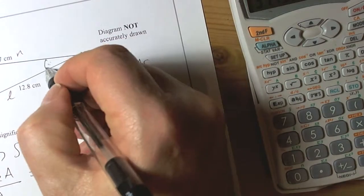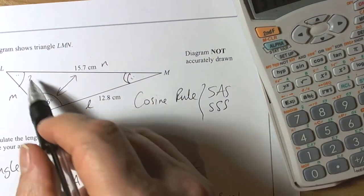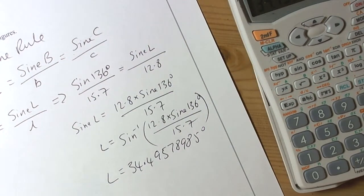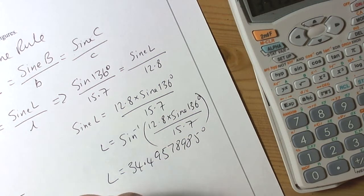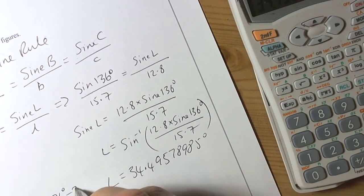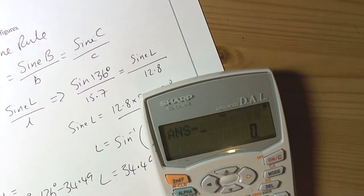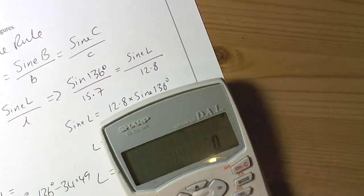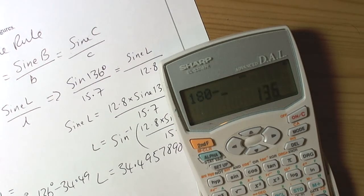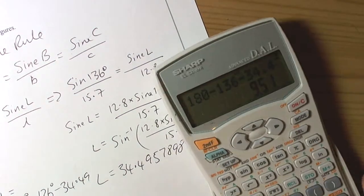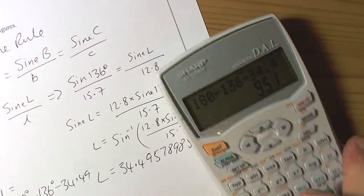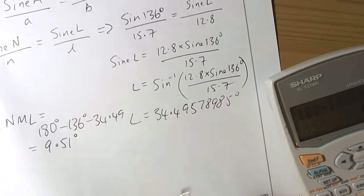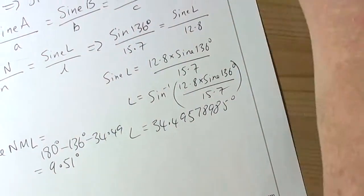Therefore we can work out the remaining angle because angles in a triangle add up to 180 degrees. Angle NML equals 180 minus 136 minus 34.49, which gives us 9.51 degrees. So we've found that angle NML is 9.51 degrees, and we can now use the cosine rule.